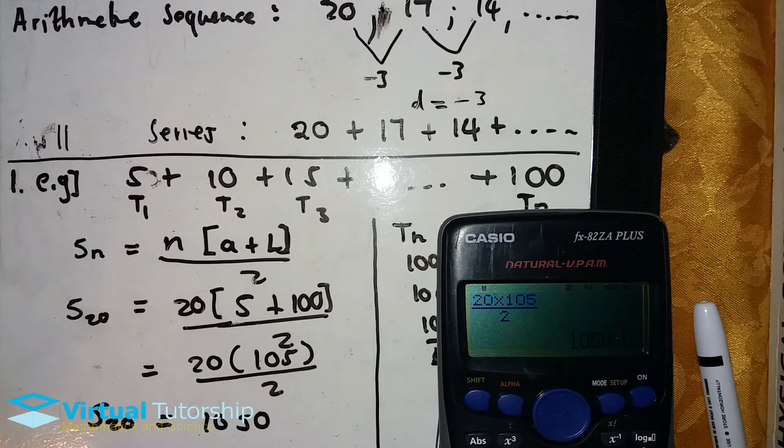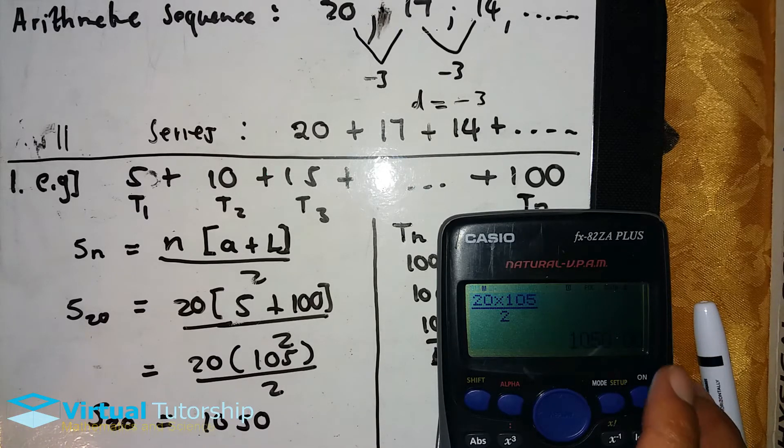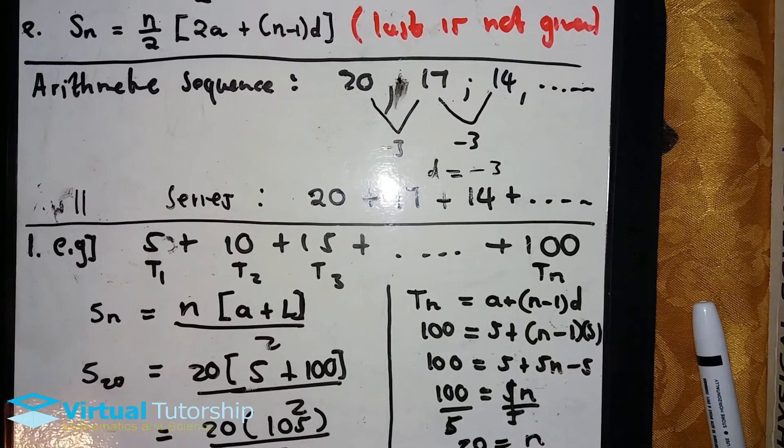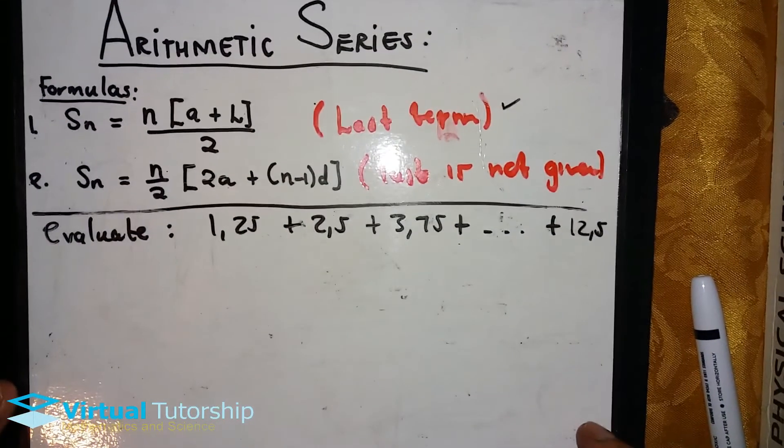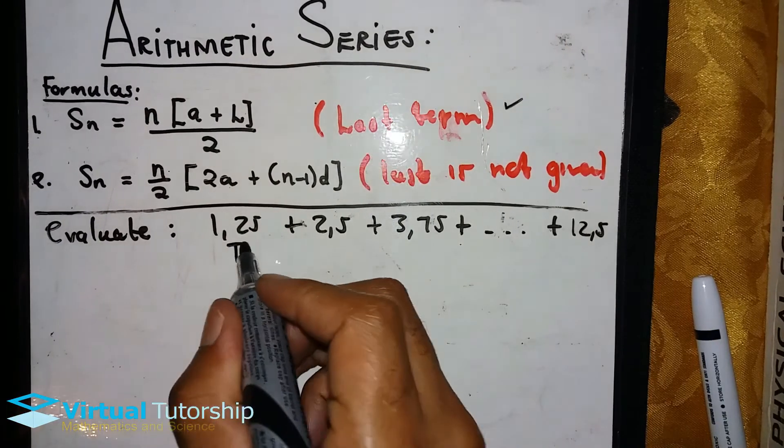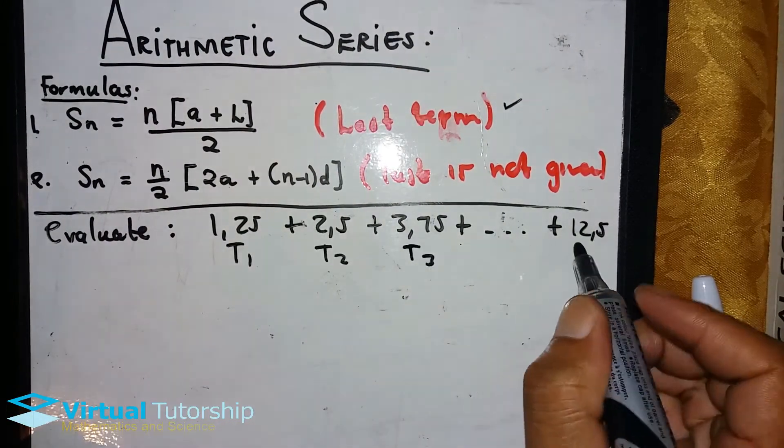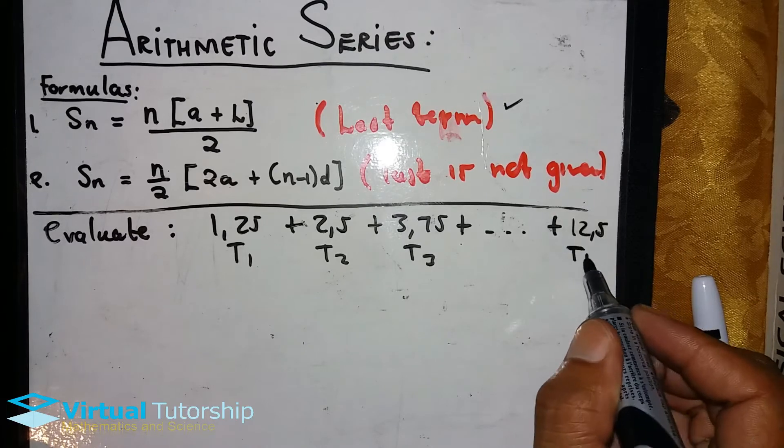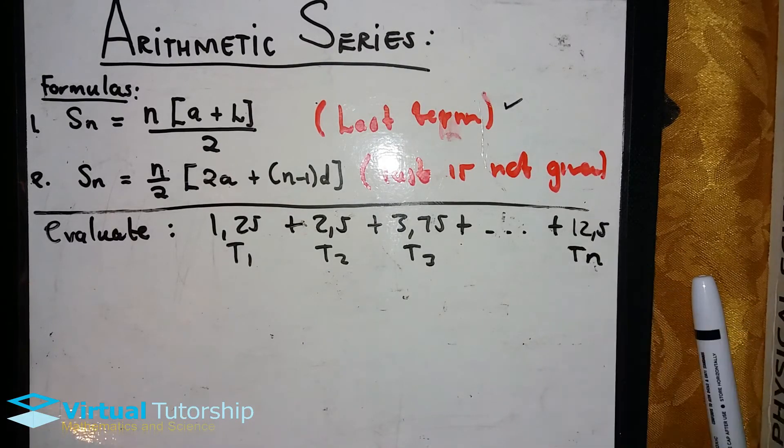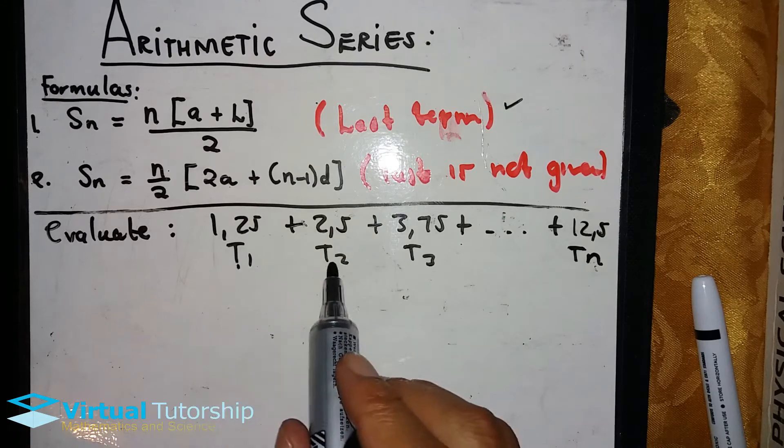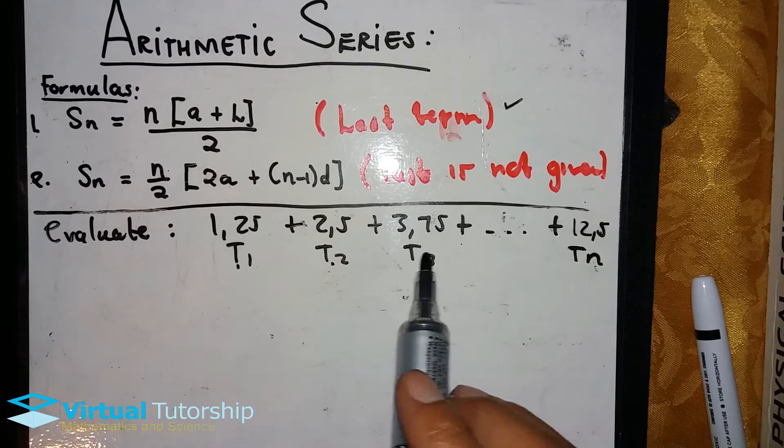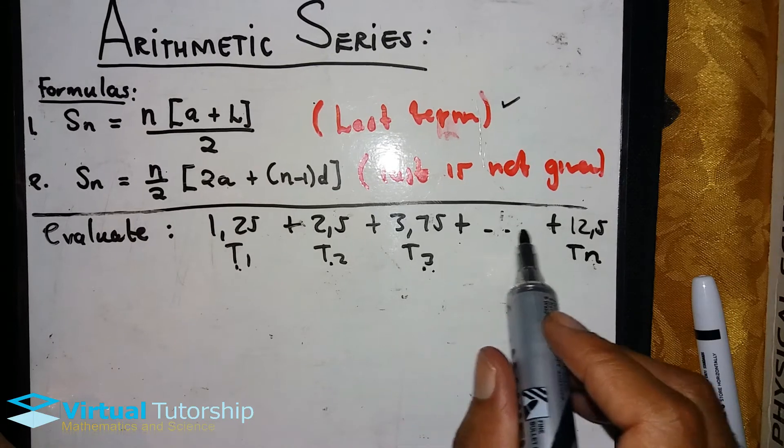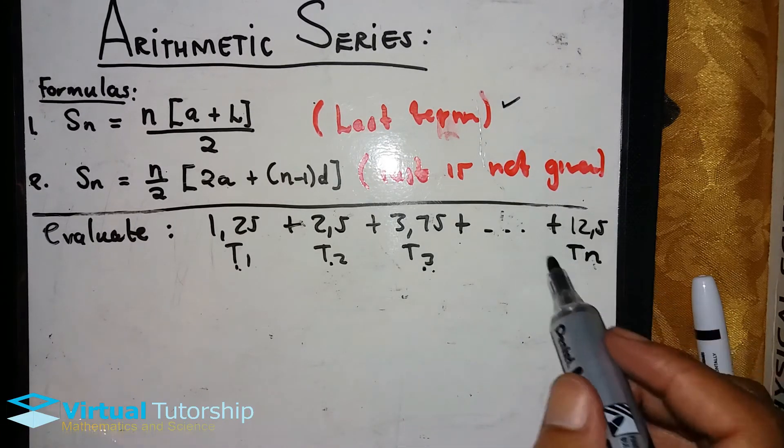Now another example. This is the first term, second term, third term, and the fourth term. So we have the first term and the fourth term given: 1.25, 2.5, 3.75, and 12.5. There are terms from one to three, and then from the third term up to the end term. We need to calculate n.